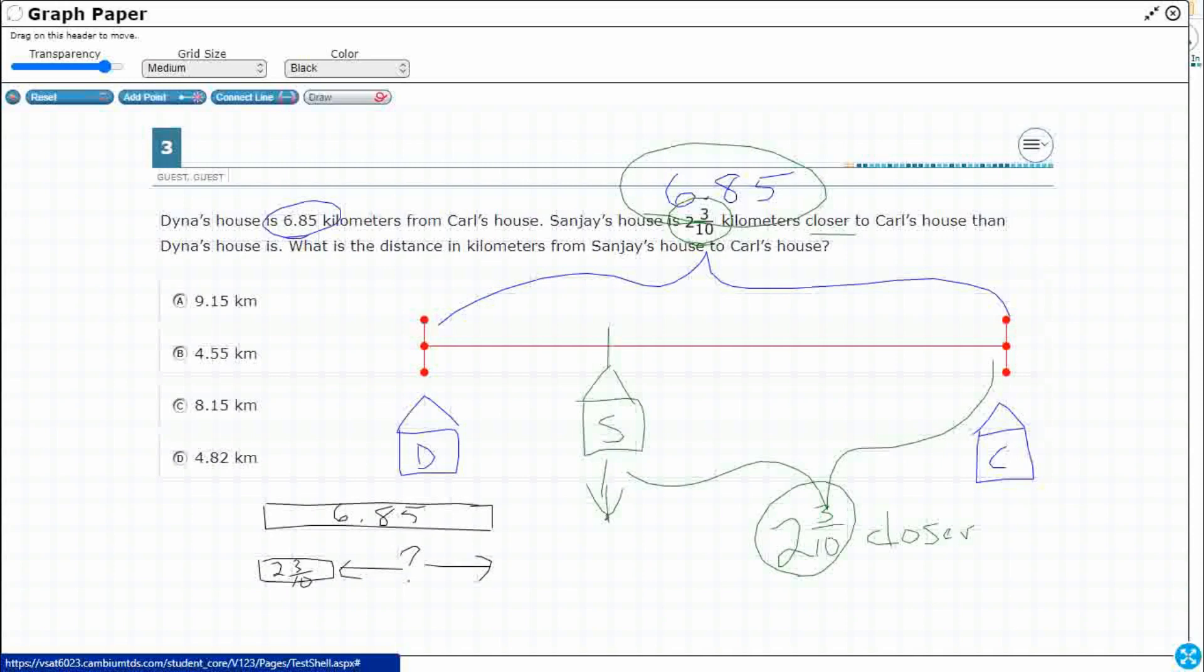Seeing as how our answers are all in decimals, you can actually do it both ways. So 6.85 is already decimal. So we can just kind of line it up like this. I've got my 2 and 3 tenths. So I need to turn that into a decimal. Thankfully it already has tenths as my denominator, right?